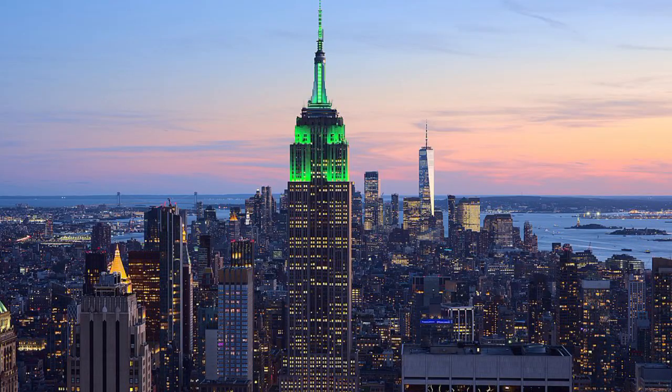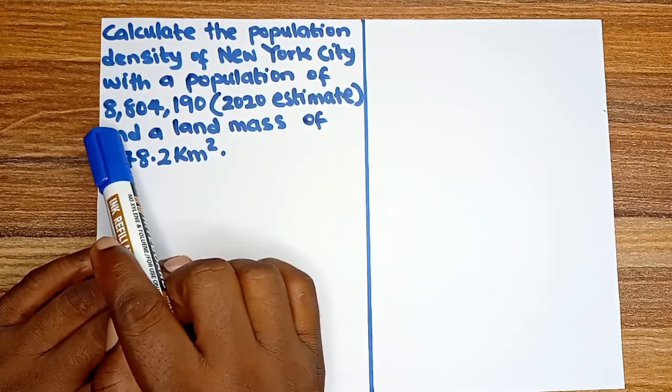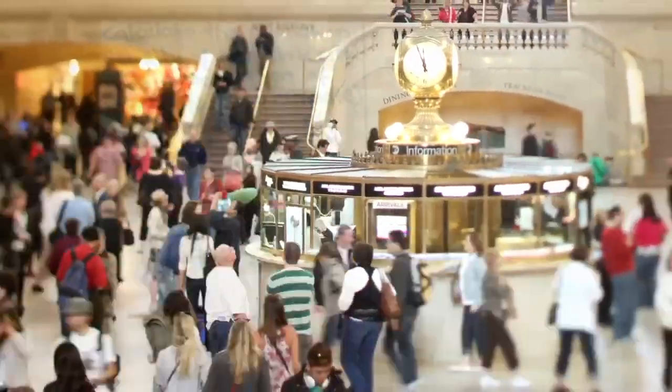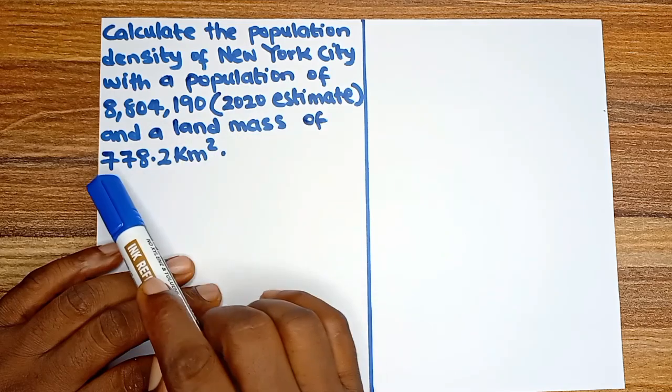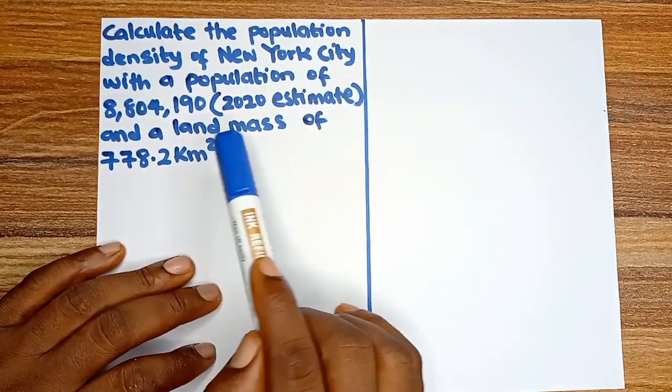We are told to calculate the population density of New York City with a population of 8,804,190 according to the 2020 estimate and a land mass of 778.2 kilometer square.